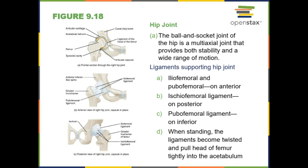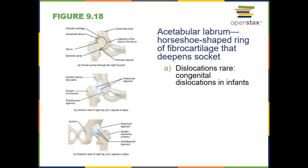We also have multiple muscles attaching from the ilium to the femur that protect the joint as well as allow for movement of the hips. Just like we have the glenoid labrum in the shoulder, we have the acetabular labrum, which is fibrocartilage that deepens the socket even more. Because of these protections and how deep the socket is, we have very few dislocations of the hip. That said, it is not uncommon to see congenital hip dislocations in infants.